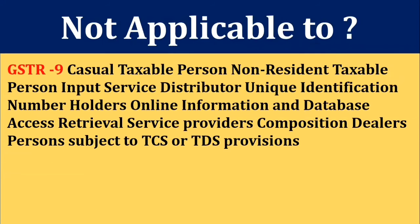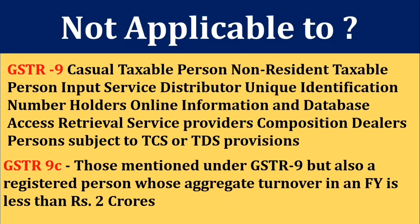GSTR 9 not applicable: casual taxable persons, non-resident taxable persons, input service distributors, unique identification number holders, online information and database access retrieval service providers, composition dealers, और persons subject to TCS या TDS provisions — इन्हें GSTR 9 file नहीं करना है। इनको छोड़कर जो regular taxable person हैं उन्हें GSTR 9 file करना है। और GSTR 9C के लिए, जिसका aggregate turnover 2 करोड़ से नीचे है उन्हें GSTR 9C file नहीं करना है।